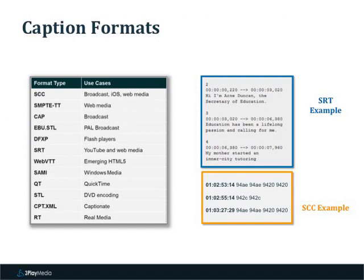Here is a list of common caption formats and where you may need to use them. On the top right is an SRT file, which I've already shown you an example of. On the bottom right is an SCC file, which uses hex frames and is obviously more difficult to understand and create from scratch. My recommendation is that if you are doing in-house captioning, start with an SRT or WebVTT file because those are easier to create and gauge the accuracy of. Then use a free caption converter to create any other formats — we have a free caption converter on our website that you're welcome to use to create more complicated formats.